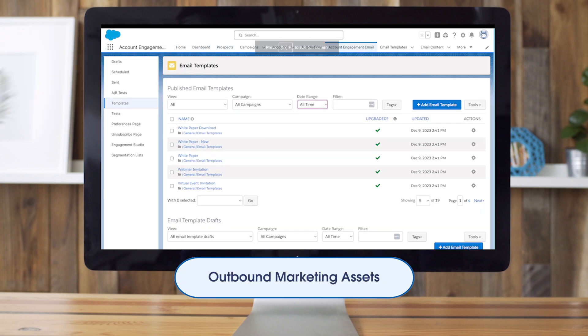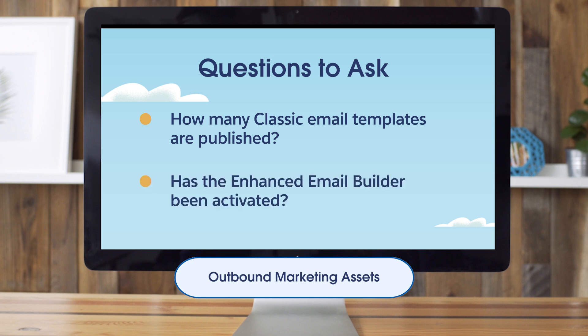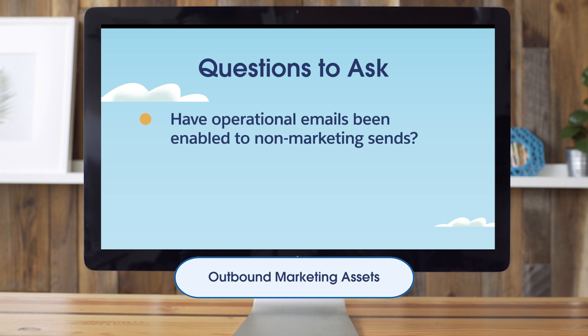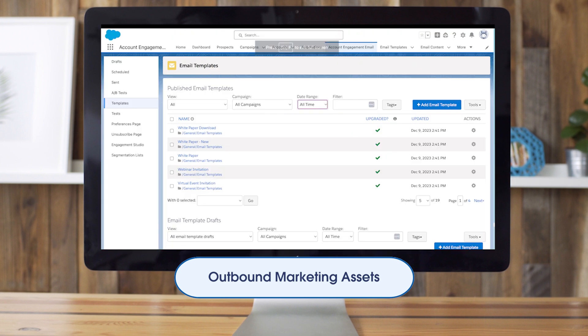Now let's look at outbound marketing items. In this section, we'll review usage of different email features and list management, including: how many classic builder email templates are published, whether the enhanced email builder has been activated, whether operational emails have been enabled for non-marketing sends, how many lists have been created, and how many dynamic lists are running but inactive. These checks will help us understand how much each feature is being used and if any cleanup or activation is required.